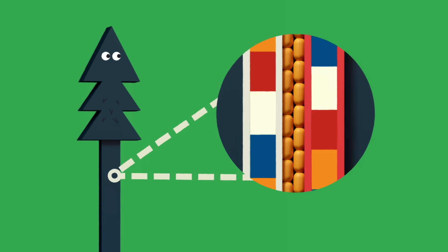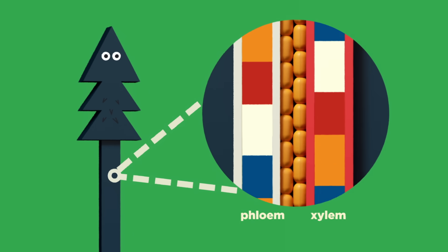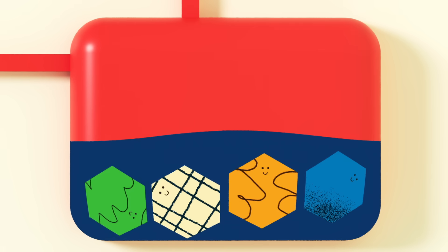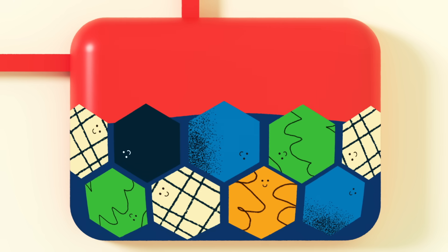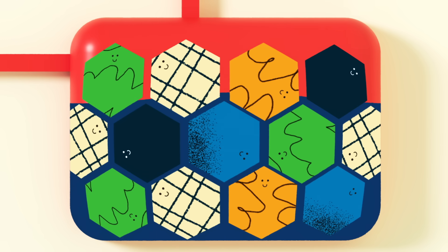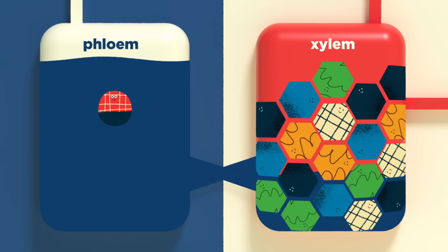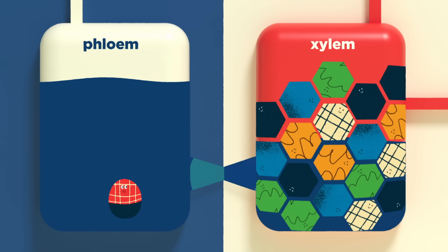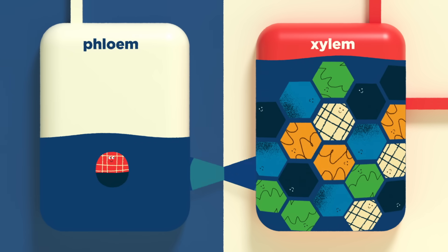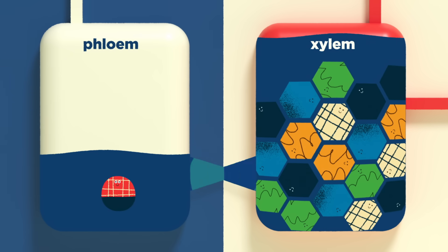Right beside the phloem is the tree's other tissue type, the xylem. This tissue is packed with nutrients and ions, like calcium, potassium, and iron, which the tree has absorbed through its roots. Here at the tree's base, there are more of these particles in one tissue than the other, so the water from the phloem sap is absorbed into the xylem to correct the balance.